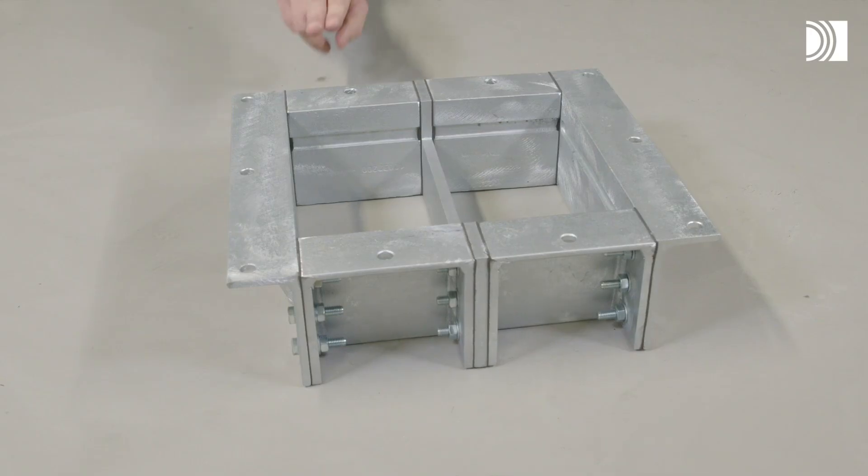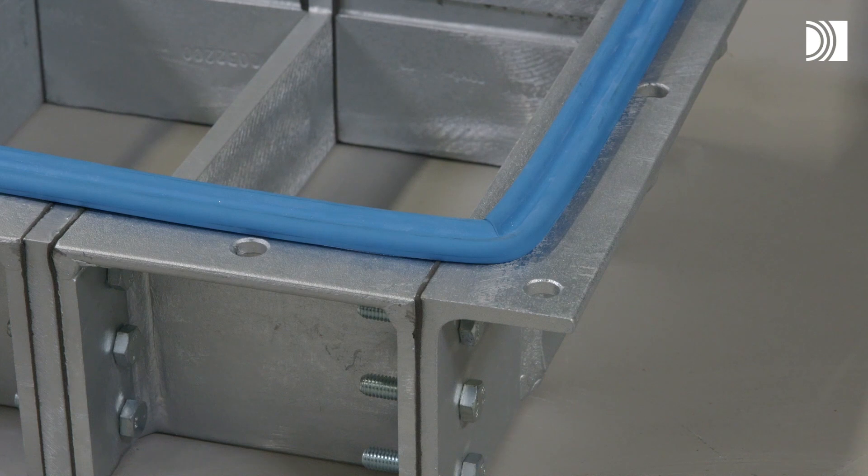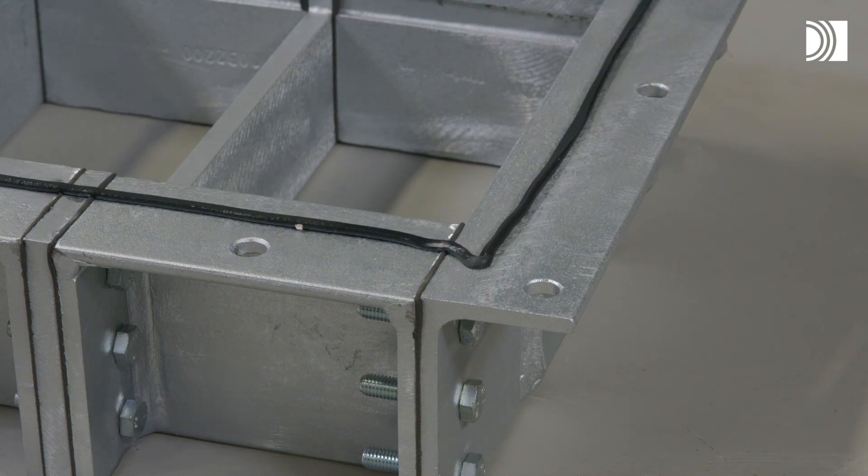Remember to verify that the gaskets protrude or are at least flush with the frame to ensure tightness towards the structure. A GKO transit is often used in a wide variety of structures. The frame must be attached to the structure in line with guidelines using suitable gasket and fasteners.